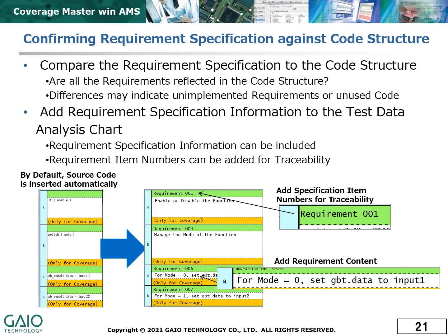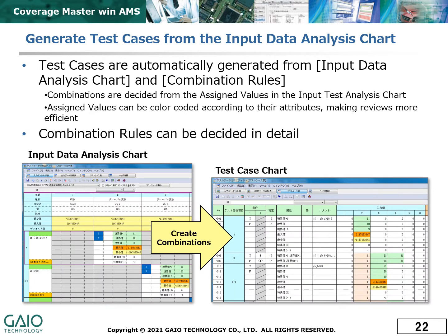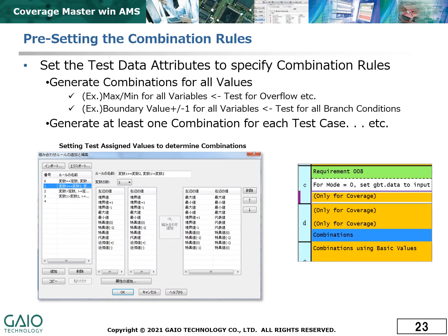Information from the requirement specification can be added to the test data analysis chart to make specification traceability more visible, and quickly identify unused or unnecessary code blocks. Once the input data analysis chart is complete, it is used to create the test cases in the test case chart. This is also visually optimized to facilitate efficient design reviews. Attributes can be set to decide the combination rules for test values such as maximum, minimum, and boundary values.